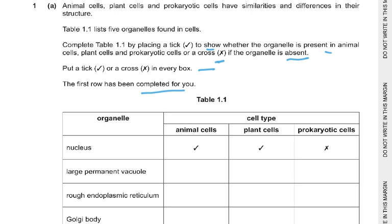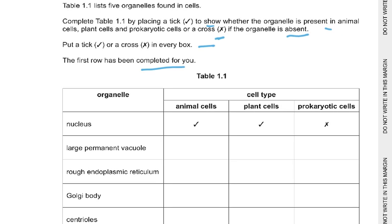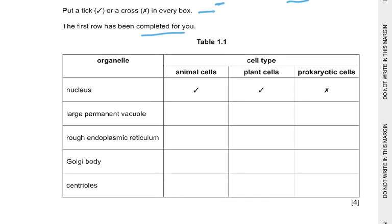You won't get marks if you leave out the crosses. This is very basic: large permanent vacuoles are only present in plant cells. Rough endoplasmic reticulum is present in animal and plant cells but not in prokaryotes. Golgi body is not present in prokaryotic cells, and centrioles are only present in animal cells.